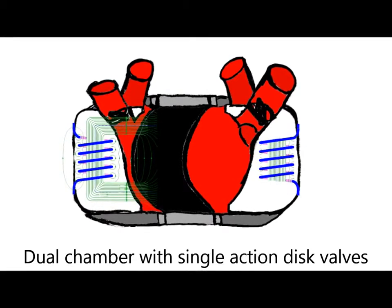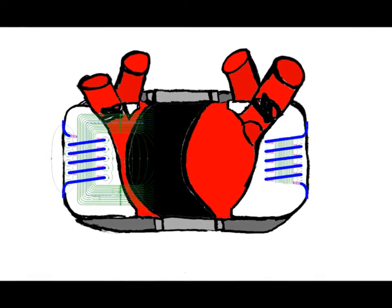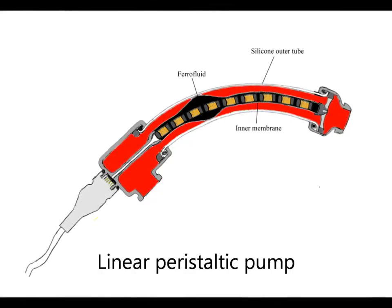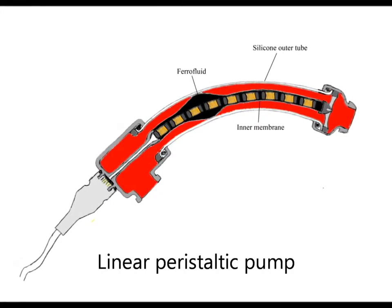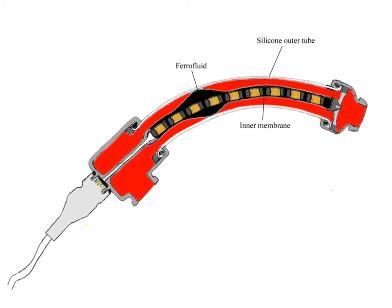A traditional dual chamber pump can be made with single action disc valves similar to a traditional heart pump. Or a linear peristaltic pump can be made that conveys the fluid along its axis and is flexible.